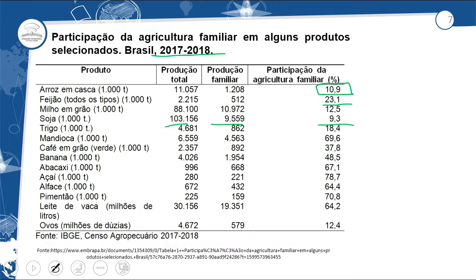Mandioca: produção total de 6.559, produção familiar de 4.563 — 69,6% de toda a produção da mandioca é realizada pela agricultura familiar. Essa mandioca faz o tucupi, usado na culinária, o molho de pimenta, o pato no tucupi, o tacacá, a farinha seca, a farinha d'água, a tapioca e a goma. São produtos da culinária regional — adquirimos esse hábito dos indígenas. É um produto mais voltado para o consumo interno.